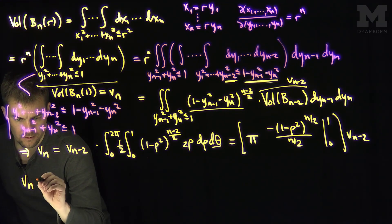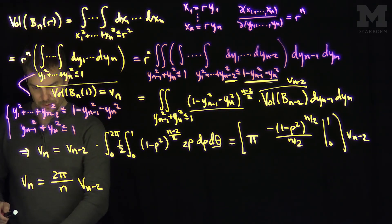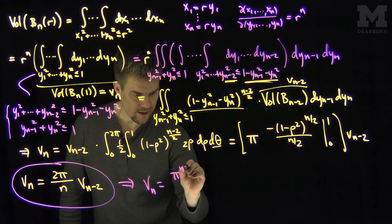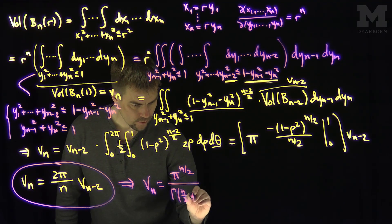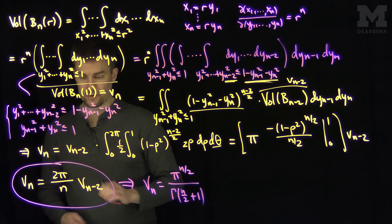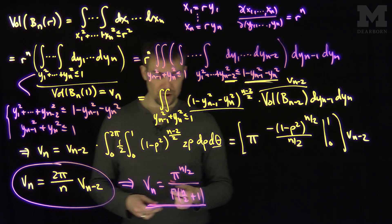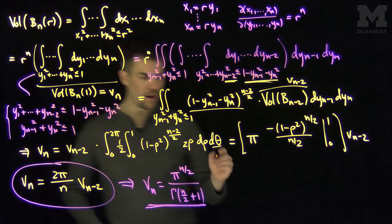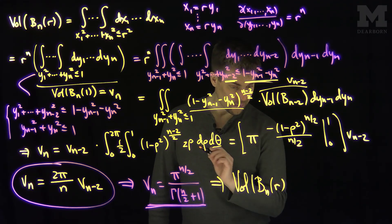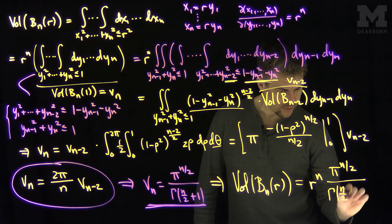This implies V_n = (2π/n) · V_{n-2}. This is a very famous recursion relationship, and it is satisfied by V_n = π^{n/2} / Γ(n/2 + 1). We've seen in former videos how the gamma function relates to square roots of π. So the volume of the ball of radius r in n dimensions is r^n · π^{n/2} / Γ(n/2 + 1).